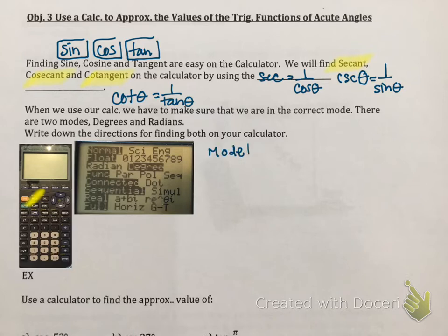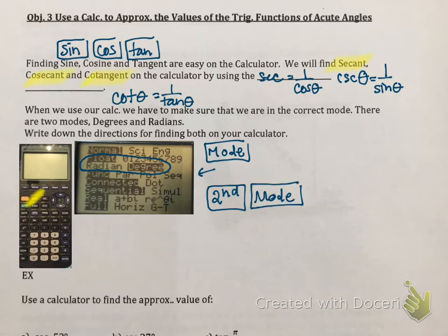So you click on the mode button. And that should bring you up to a screen that looks like what I just made an arrow to. And you're going to see radians or degrees. So one is going to be highlighted. If you're looking for radians, you highlight the radian section. If you're looking for degrees, you highlight the degrees section. After you're done fixing or figuring out which one you want, you have to hit the second button, at least on my calculator. And then you click mode to get out of that menu. So once again, this is to quit out of the menu.